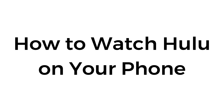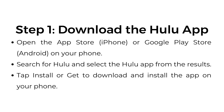How to watch Hulu on your phone. Step number one: download the Hulu app. Open the App Store on iPhone or Google Play Store on Android on your phone. Search for Hulu and select the Hulu app from the results. Tap Install or Get to download and install the app on your phone.